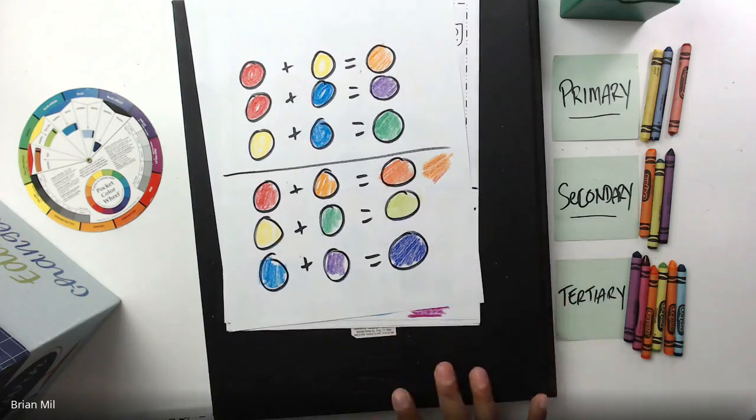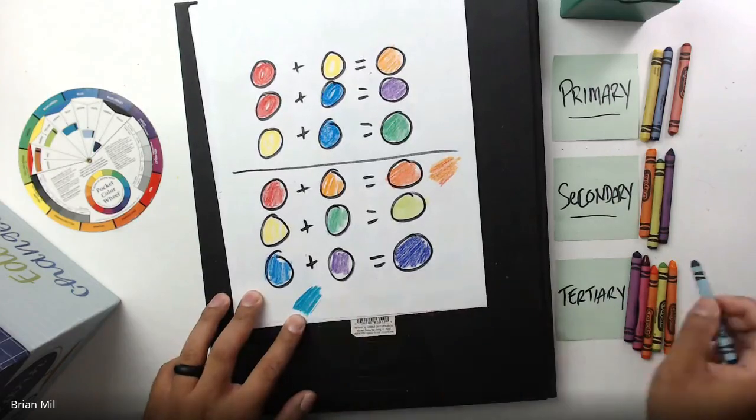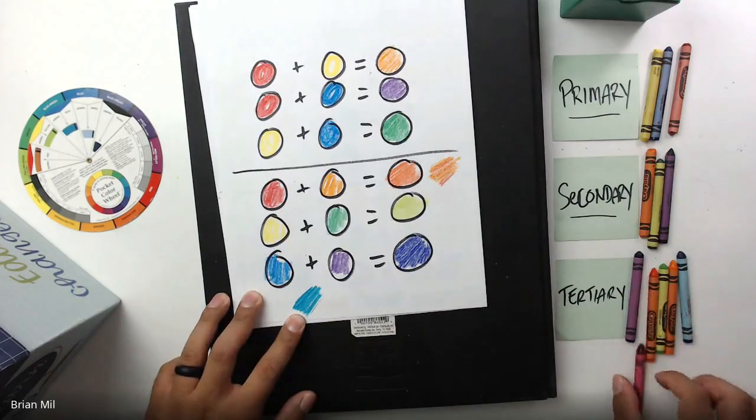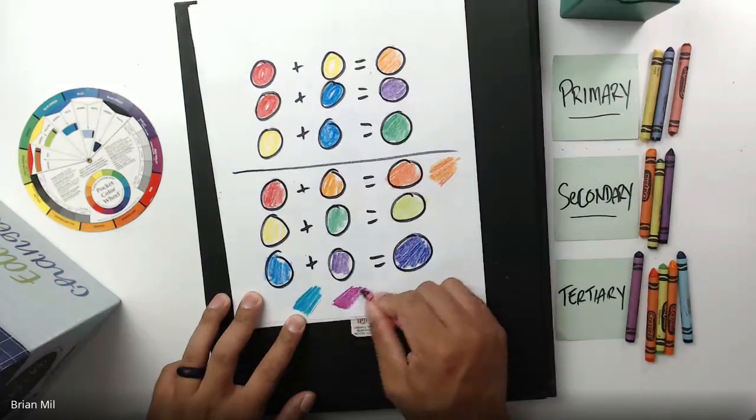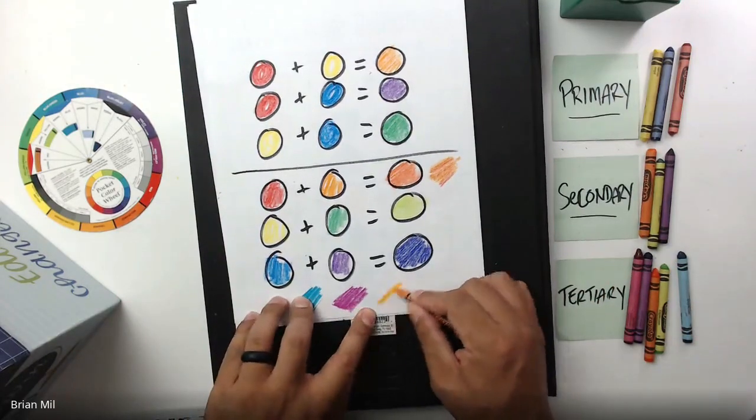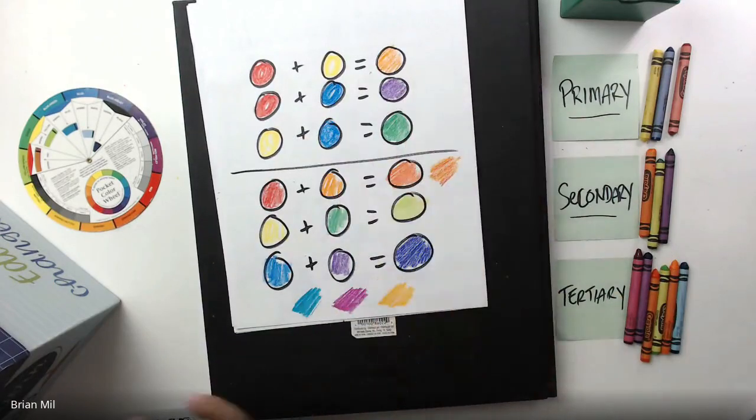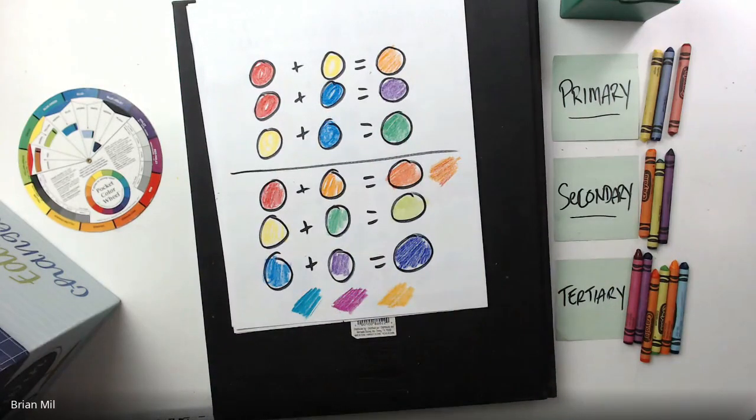Those are three out of the six tertiary colors that we have gone over with you guys right now. The other colors that we didn't talk about are blue green, that's a tertiary color. There is another color called red violet, and there's also a color called yellow orange. This is officially all the colors of the color wheel.